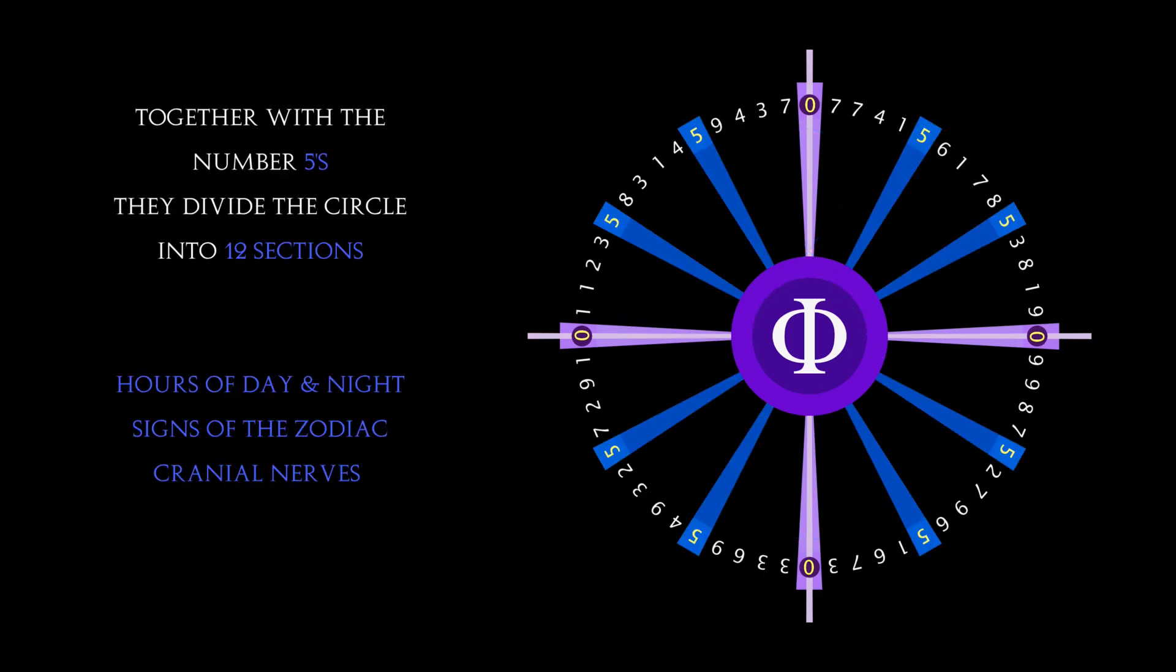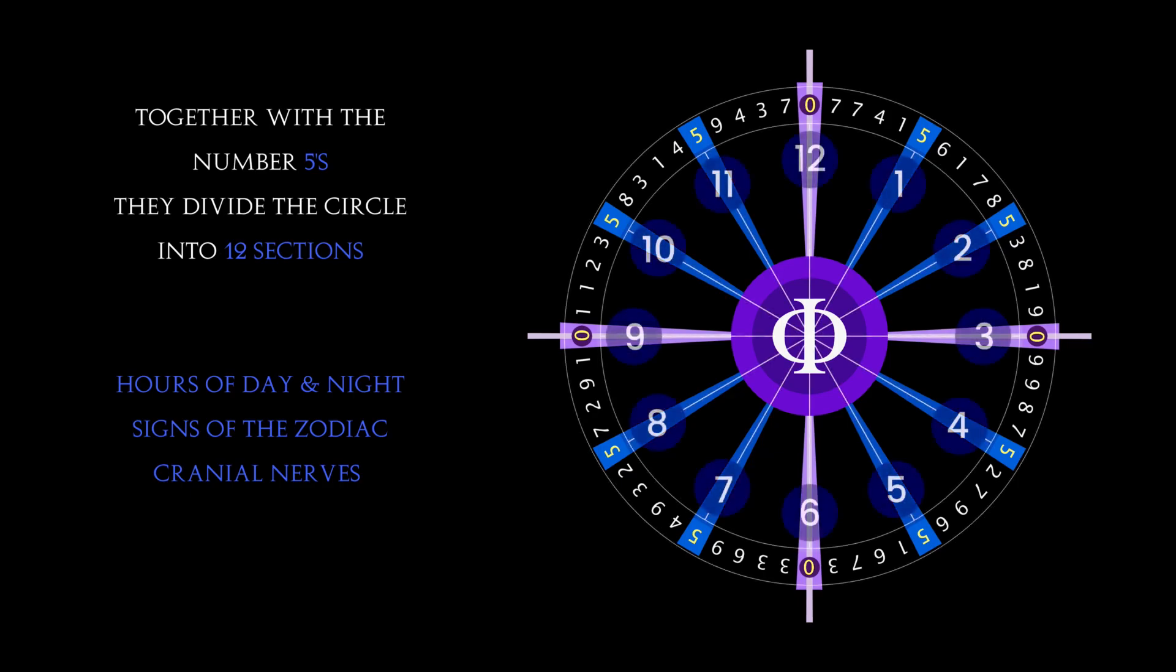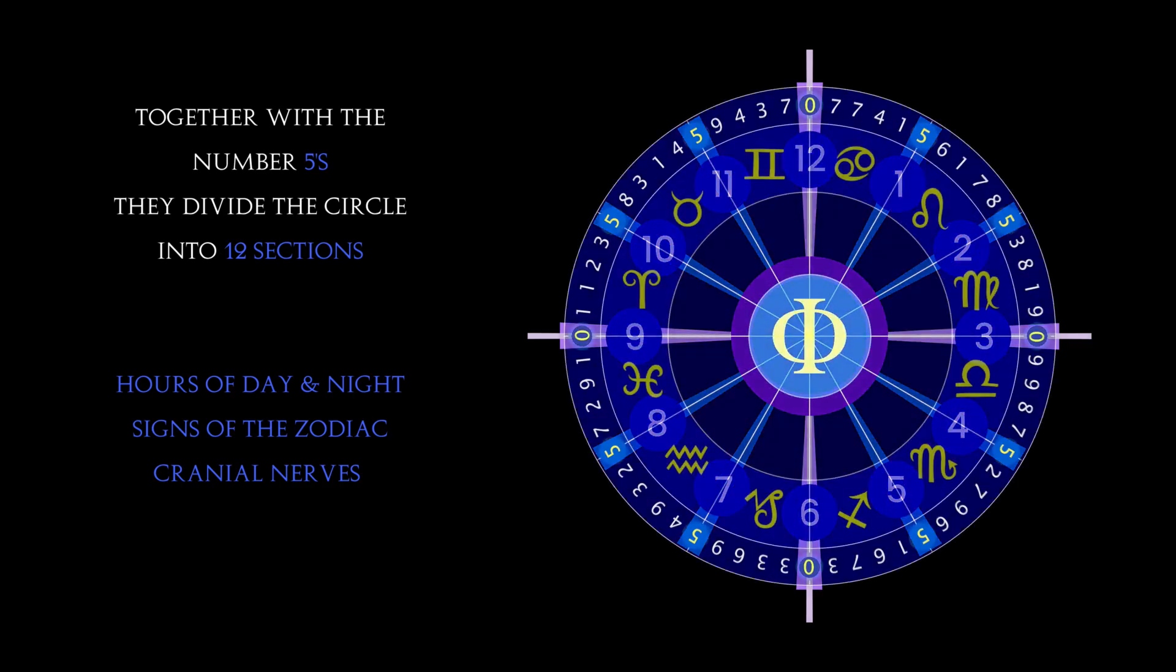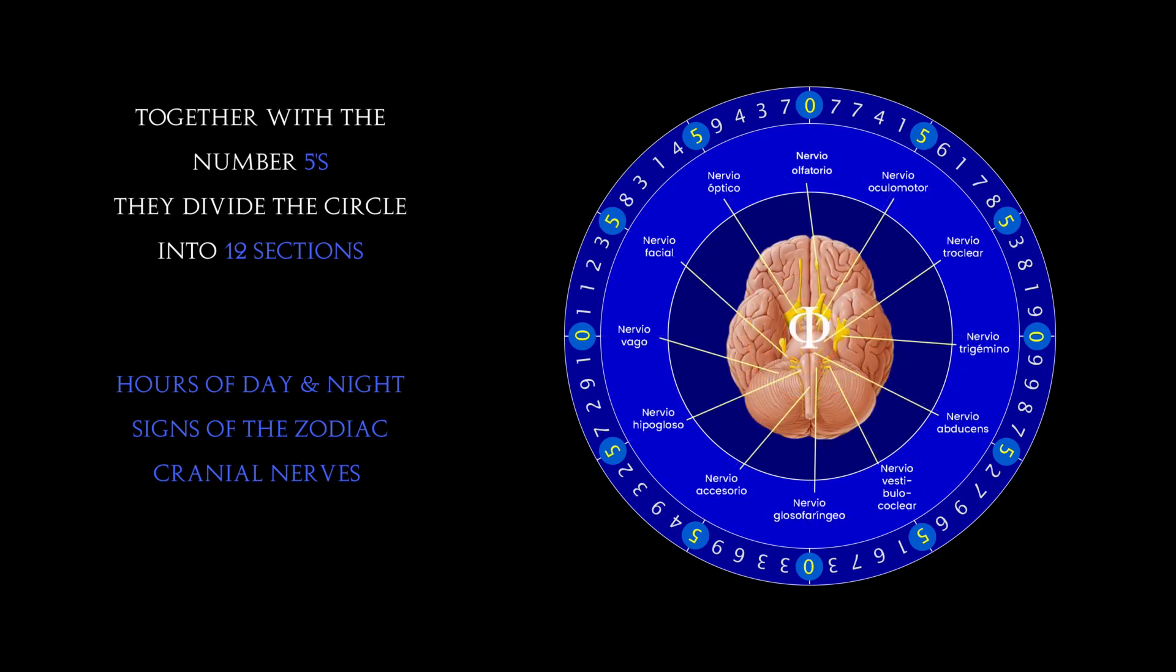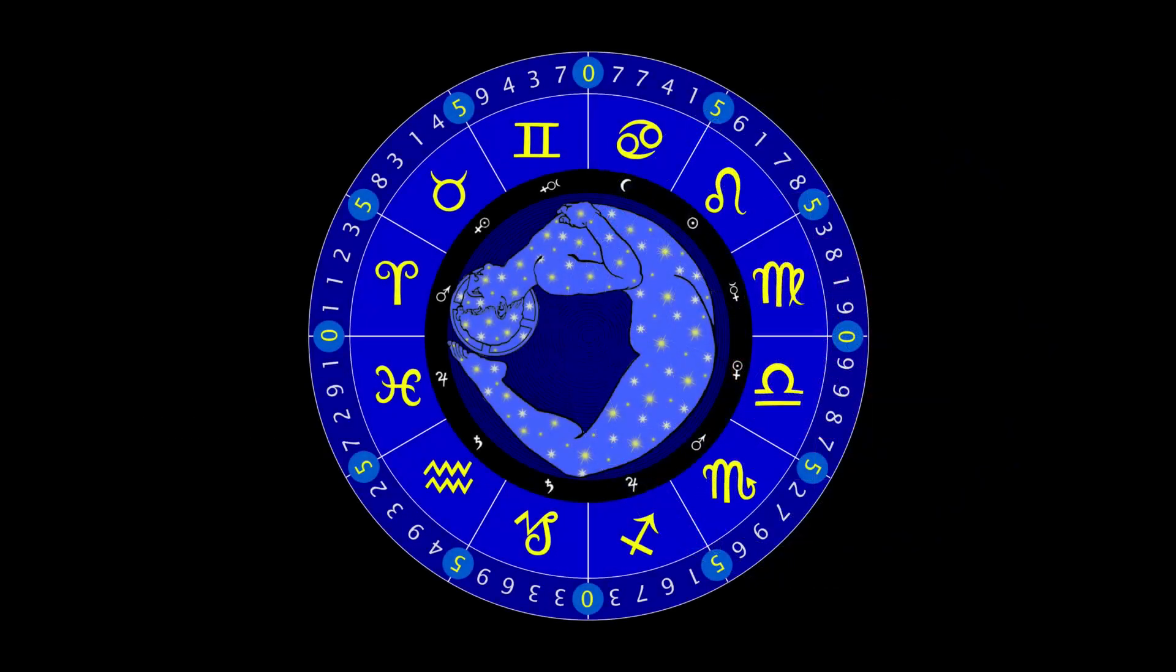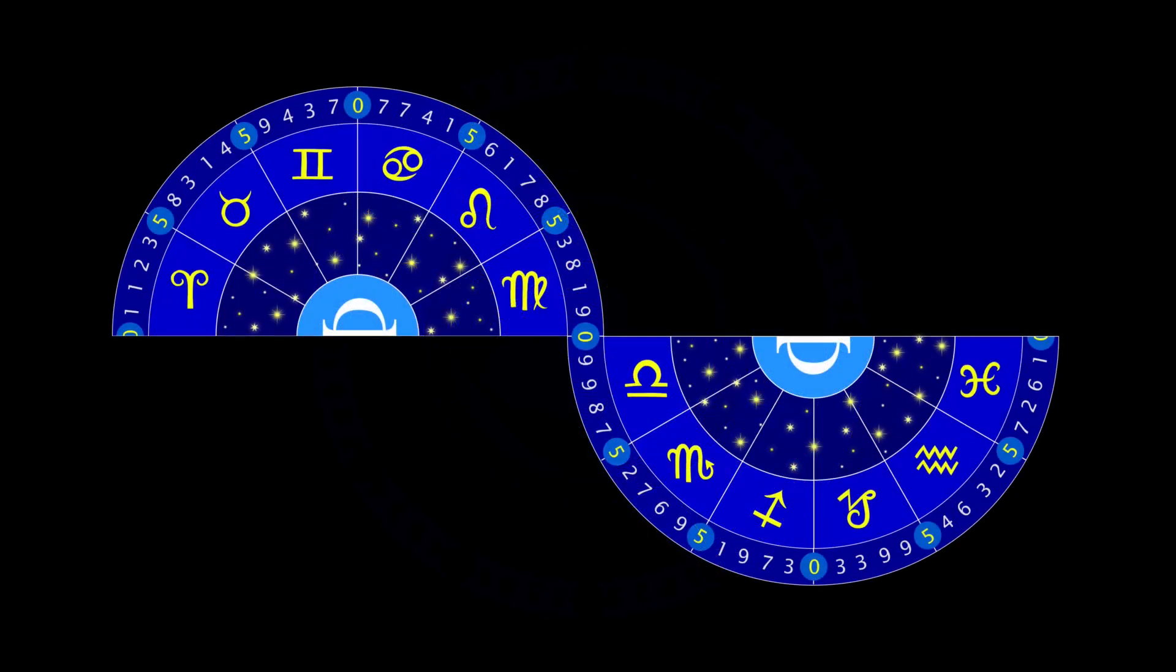Together with the number fives, they divide the wheel into 12 parts, like the hours of day and night, the zodiac signs, and the 12 cranial nerves, showing that phi corresponds with the astrological zodiac wheel, which can also be represented as a sine wave.